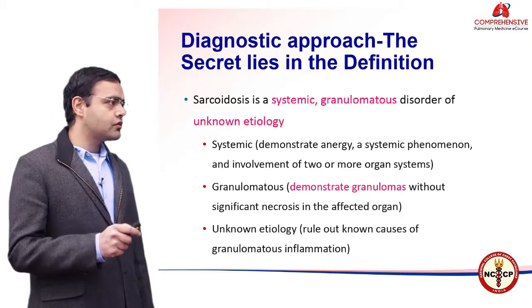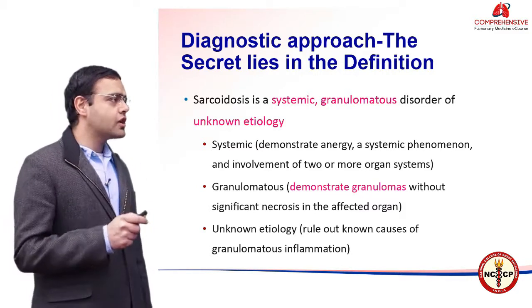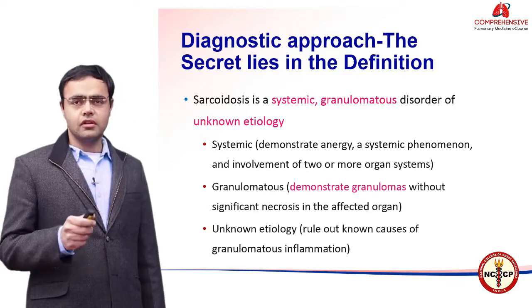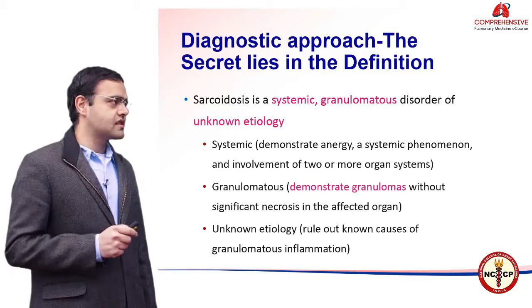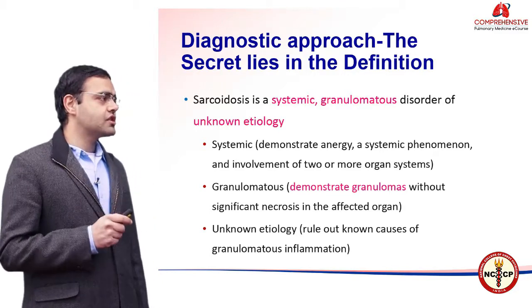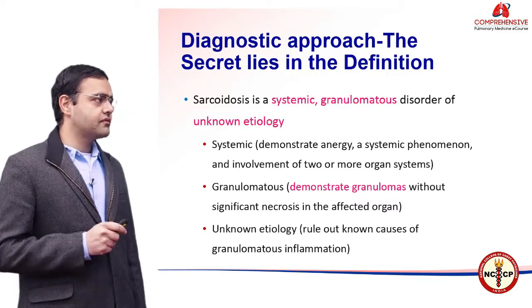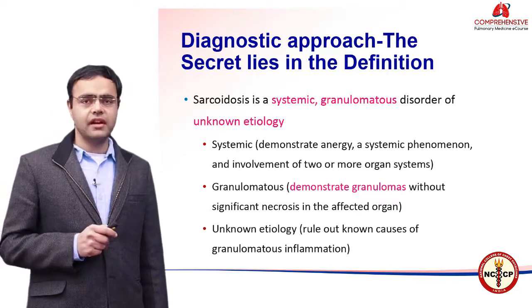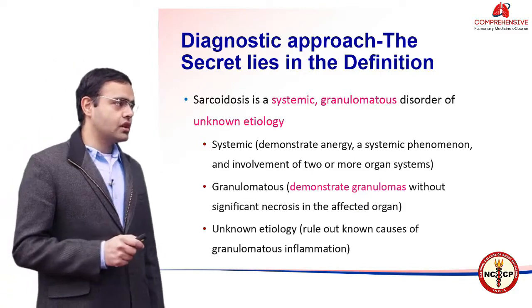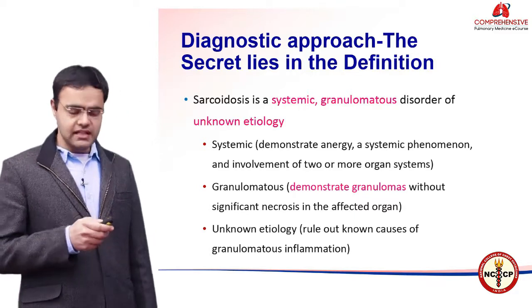Systemic — you have to demonstrate anergy, which is a systemic phenomenon, and you have to demonstrate the involvement of two or more organ systems for the disease to be called systemic. Second is demonstration of granulomatous inflammation — finding of granulomas without significant necrosis in the affected organ or organ systems. Third is unknown etiology — one has to rule out known causes of granulomatous inflammation.